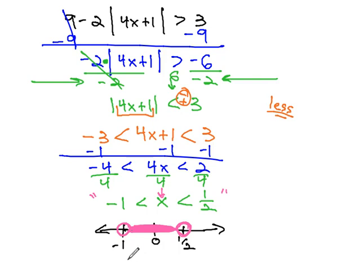We can represent this in interval notation with a curve bracket at negative 1, because we're not equal to it, and a curve bracket at 1 half, because we're not equal to it.